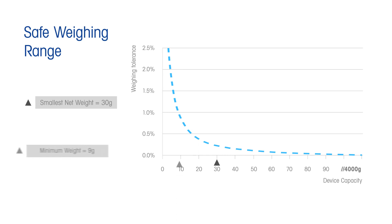We can clearly see that uncertainty increases dramatically when weighing small amounts. In this example, we will use a weighing tolerance of 1% and a safety factor of 2. As you can see, weighing above 18 grams is clearly within the safe weighing range.